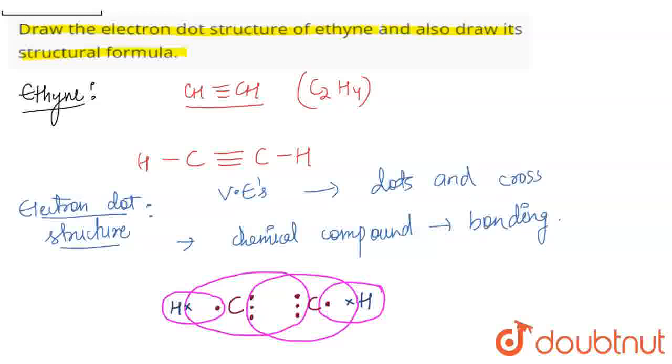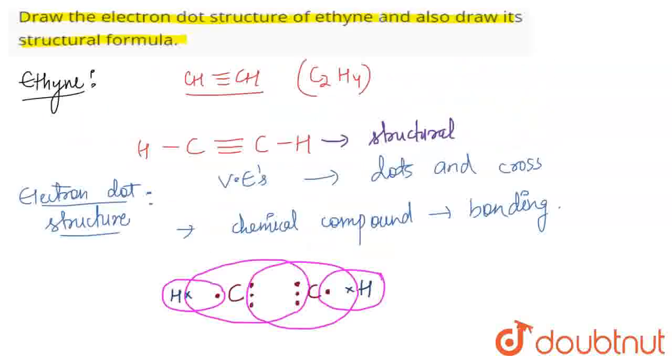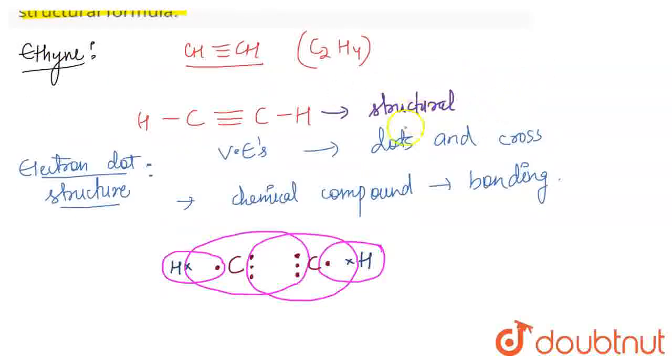So this is our Lewis dot structure. We show you the bonding, basically we show you that the bonding completes your atoms. So this is your electron dot structure and this is your structural formula. This is your answer. Thank you.